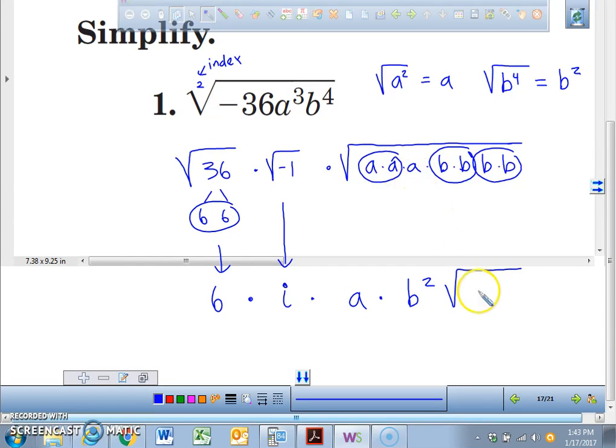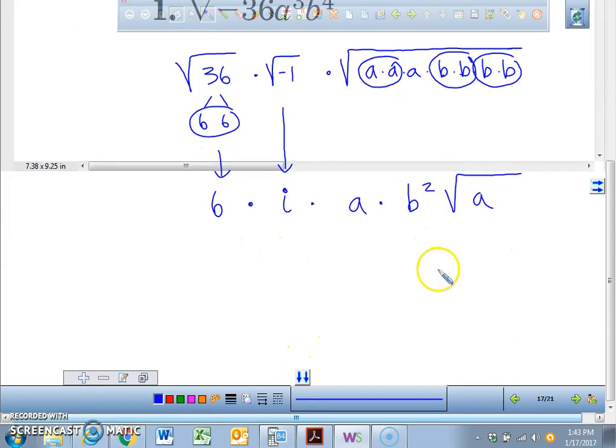What's still left inside of the radical that didn't get pulled out? We have one little a right here that was left inside. Now I want you to understand when we put this together, we're going to have a 6. We're going to have an i. We're going to have an a. We're going to have a b squared, radical a.